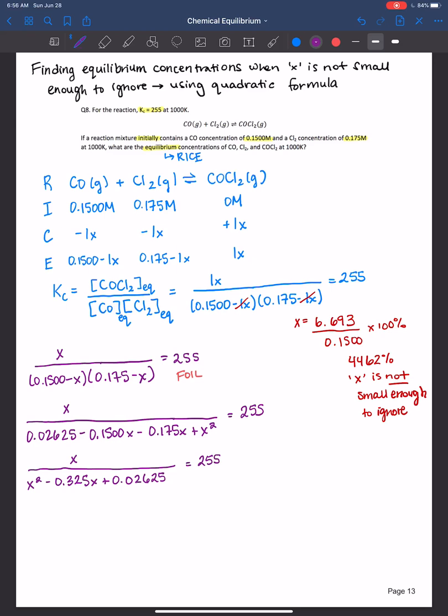I'm going to multiply this entire equation on both sides, so to bring it up kind of on the top there. So when I do that, I get 255x squared minus 82.875x plus 6.69375 is equal to x.